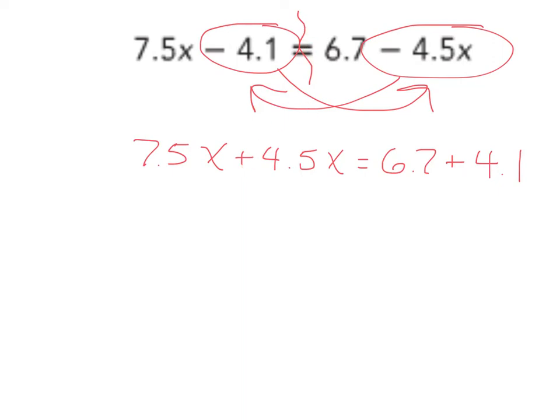For our next step, let's combine our x's. So 7.5 plus 4.5, well, 7 and 4 makes 11. 0.5 and 0.5 is 1, so 11 plus 1 is 12. So it'll be 12x equals. 6 and 4 is 10. 0.7, 0.1 is 0.8. So 12x equals 10.8.